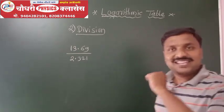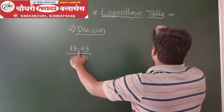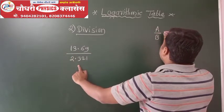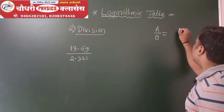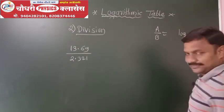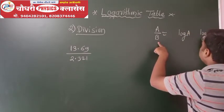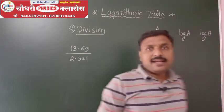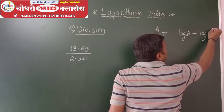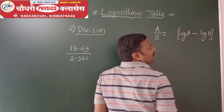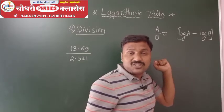So we have an A value and a B value, and this is a complicated division. How do you solve it? You take the log of A and the log of B. In logarithmic language, the division of logs means subtraction — log of A divided by B equals log A minus log B.